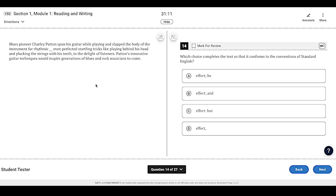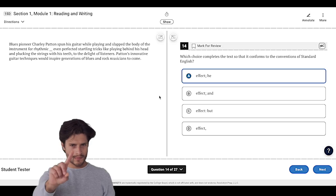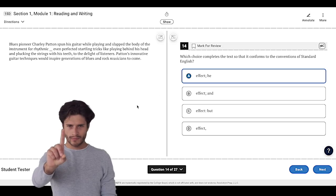All right, let's just quickly go through a couple more to solidify this knowledge. Go ahead and pause and try to answer the questions yourself first. Then I'll go ahead and explain. So we've got Charlie spun his guitar while playing and slapped the body of the instrument for a rhythmic effect. He even perfected startling tricks. And then I'm going to finish right there because we know that the sentence basically ends, right? He even perfected startling tricks like all this stuff. So we do have two full sentences, which means a period would work and a semicolon would work. Now B has a semicolon, but we have the word and. Not only do we not want to use a coordinating conjunction when we're using a semicolon, we also don't have the word he. So B is very wrong.